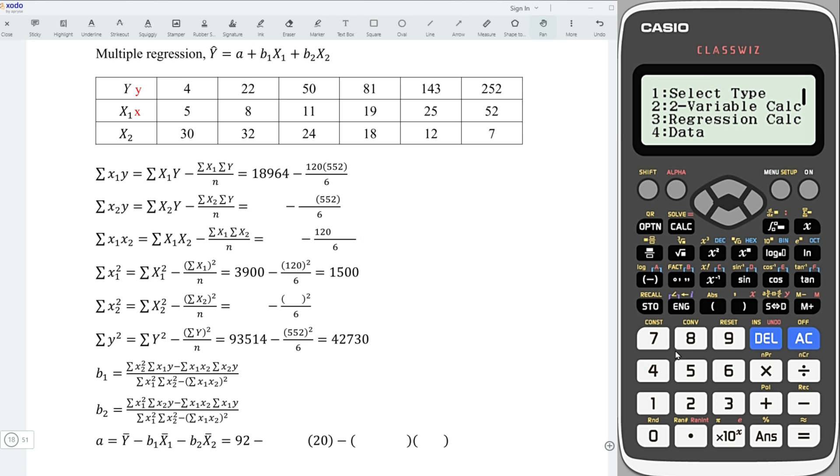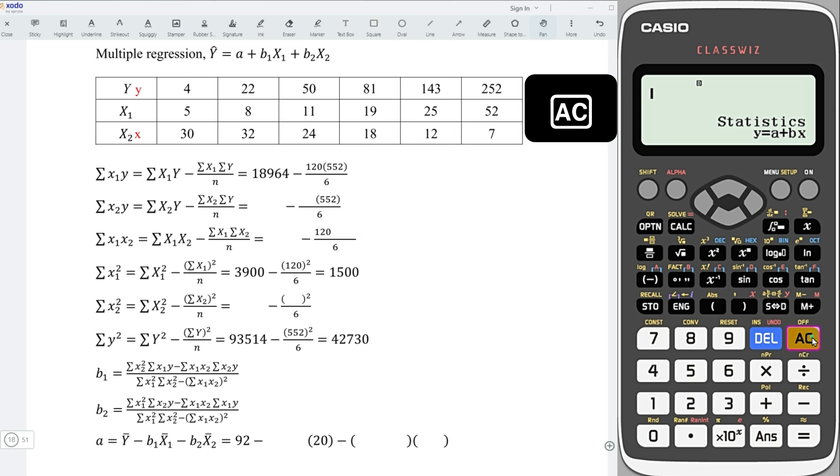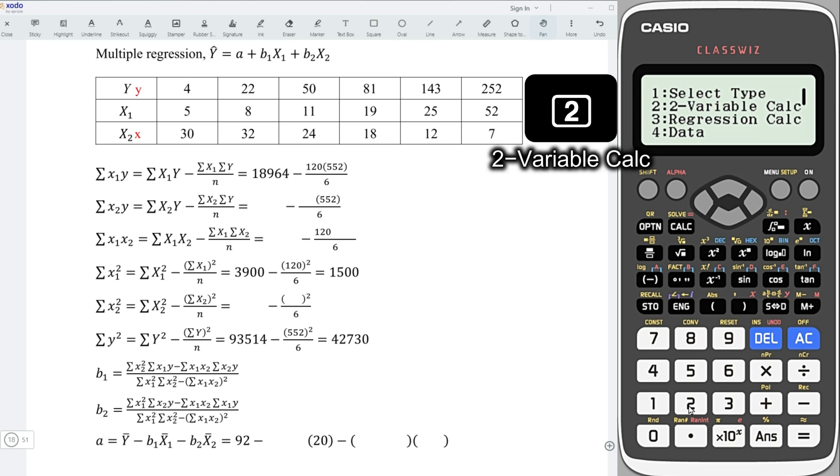Next, press on option, choose data, and this time, I will write x2 to be x. So, change the values. We have 30, 32, 24, 18, 12, and 7. Press on AC option, 2 variable calculation.